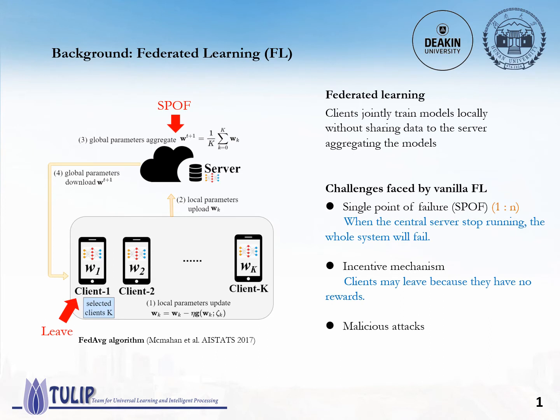Vanilla FL also assumes that clients are honest and does not consider the possibility of malicious attacks. For example, some malicious clients will upload fake gradients to attack the global model. Due to these challenges, some researchers have proposed a blockchain-based federated learning framework.